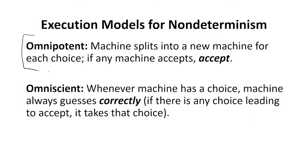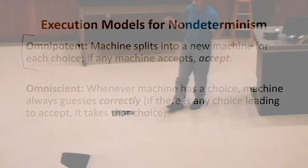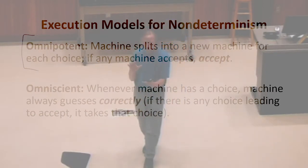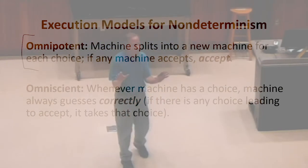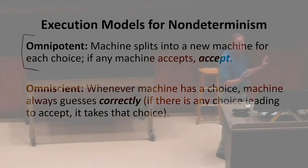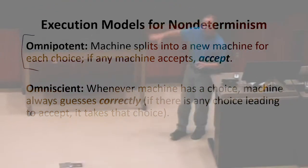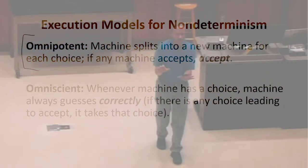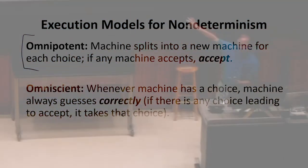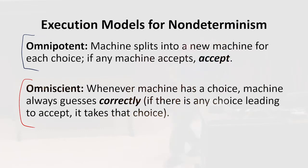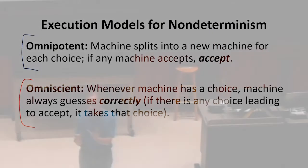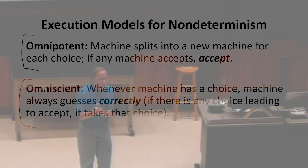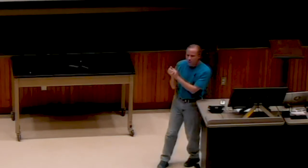We can think of execution in two ways. First, every time there's a choice, we split into two machines — one that makes each choice — and we keep all those machines running. If any of them accepts, we accept. Second, every time we have to make a choice, we magically guess the right choice, somehow knowing based on input we haven't even seen yet how to reach the accept state. Both of those sound like amazing superpowers — we certainly cannot build physical machines that do either of these things.